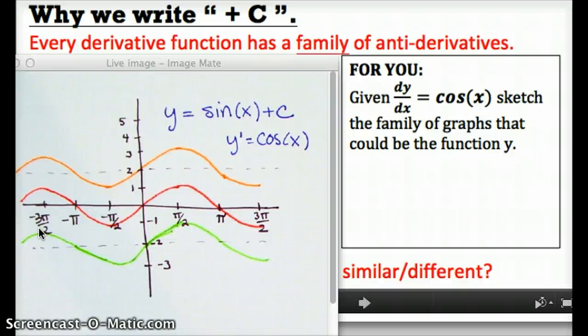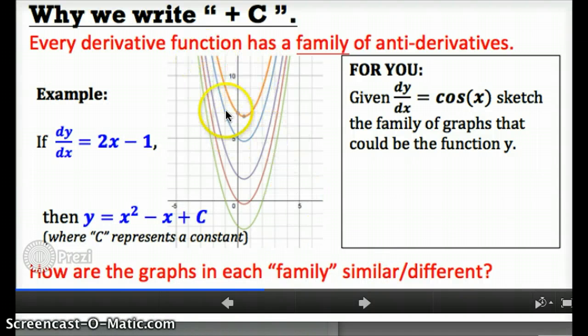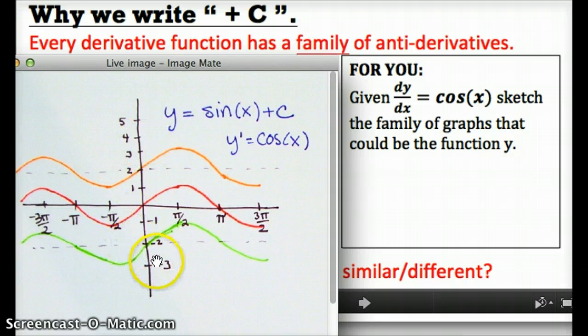So a moment ago, we talked about what was similar or different about each function in the family. I want to be a little more precise. It's not just that they have the same shape, but very specifically, each of these functions has the same slope at each x value.